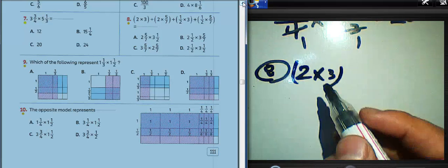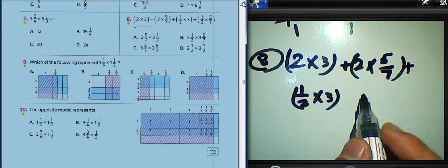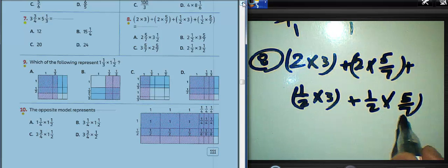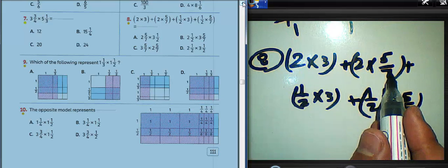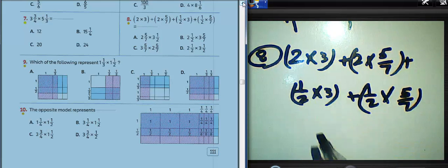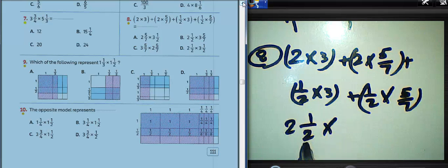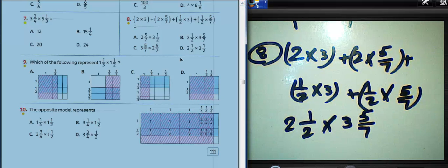Question number eight: we use the distributive property — two times three, and two times five over seven, and one-half times three, and one-half times five over seven. Look at the repeating pattern: we can write two outside the parentheses, and we have one over two. Two and one over two is two and a half. So we have two times three, and two times five over seven, and a half times three, and a half times five over seven. We must choose: two and a half, multiply by three and five over seven.